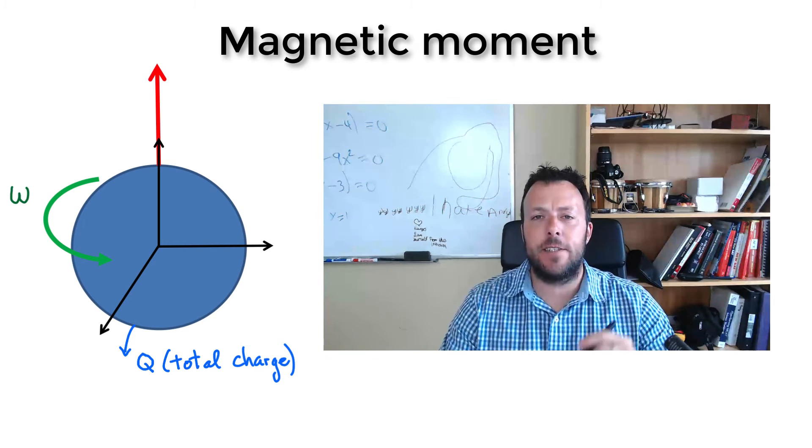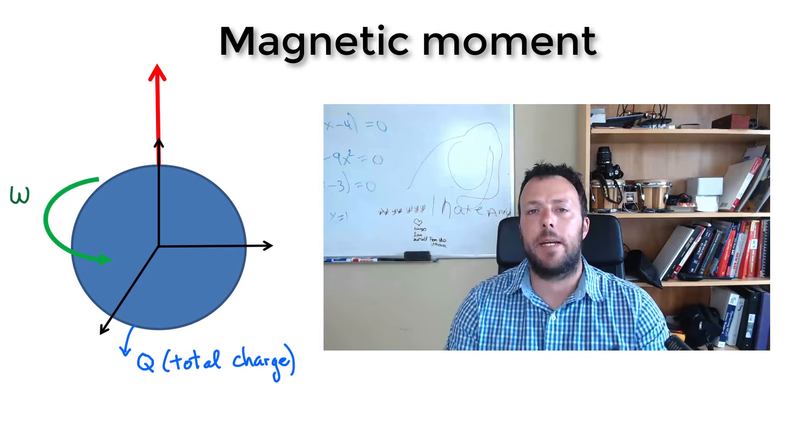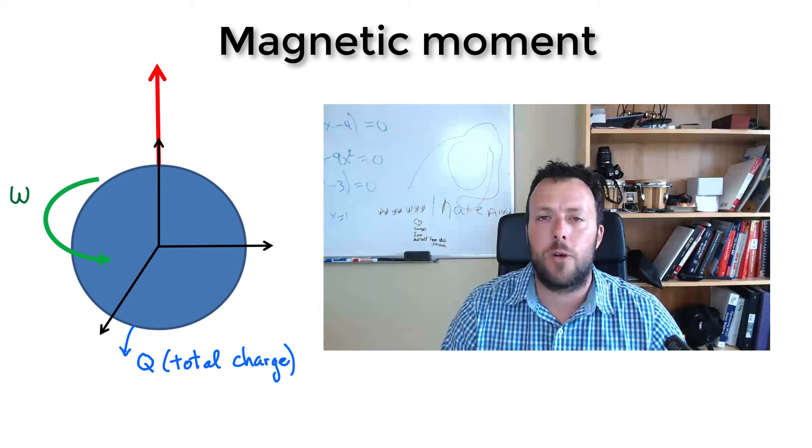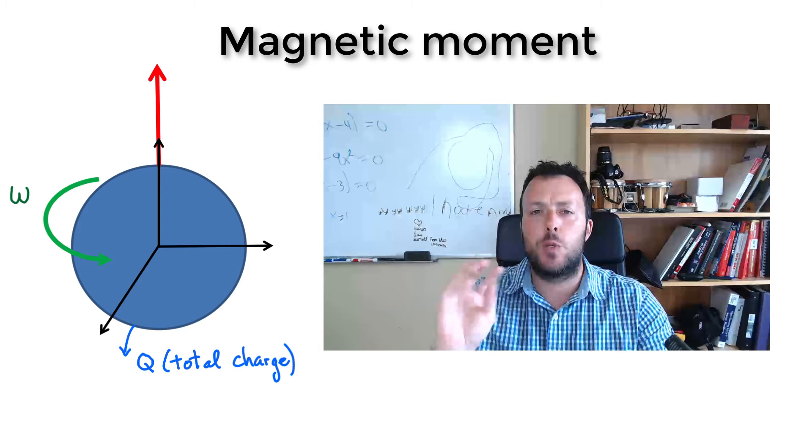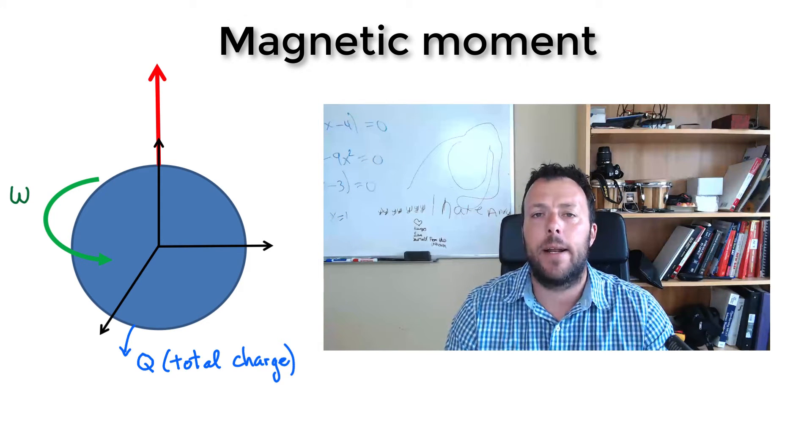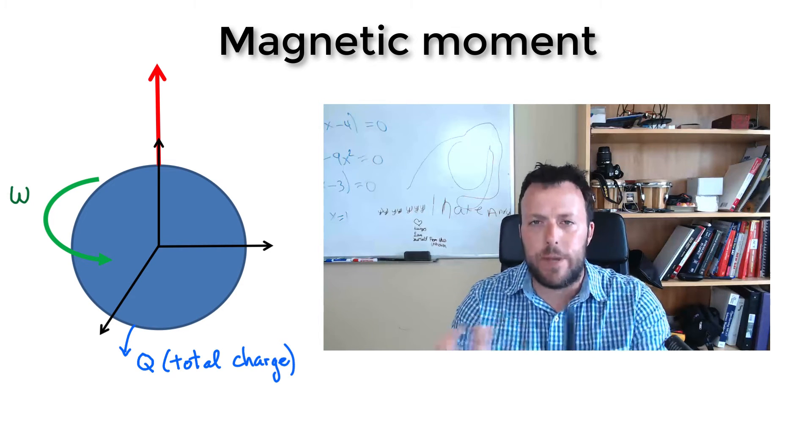Hi everybody, Physics Ninja here. This is part three, the third video in this series. We're going to look again at the magnetic moment, except this time we're going to take a sphere that is uniformly charged. We're going to spin it at some angular frequency omega, and we're going to calculate the magnetic moment produced by this spinning sphere, these spinning charges.